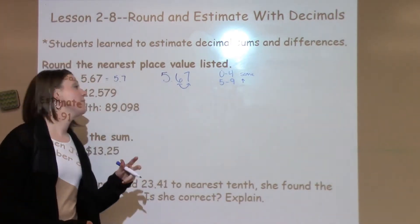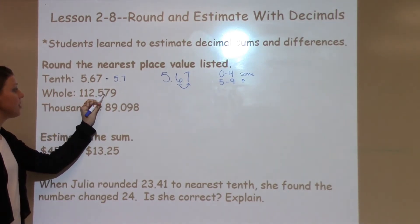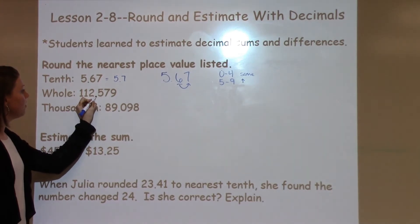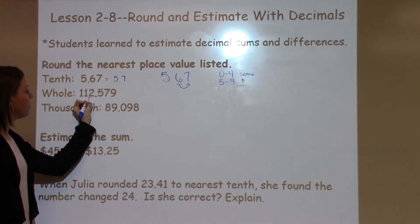Now we're going to look at estimating a whole number. We have 112.579. Look at this number. We're going to look at the decimal, and then I'm going to find the whole number, which is my 2. I'm going to underline that, draw an arrow to the tenth spot. I look at my 5. My 5 says I need to round up one more.